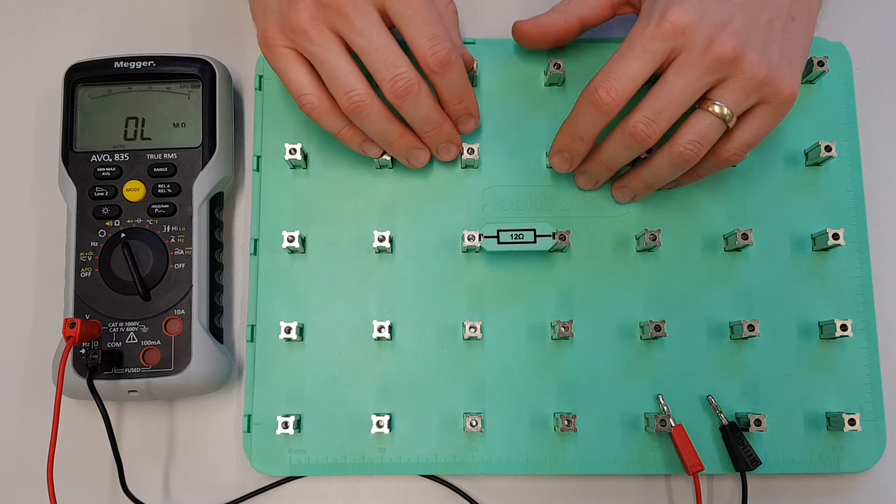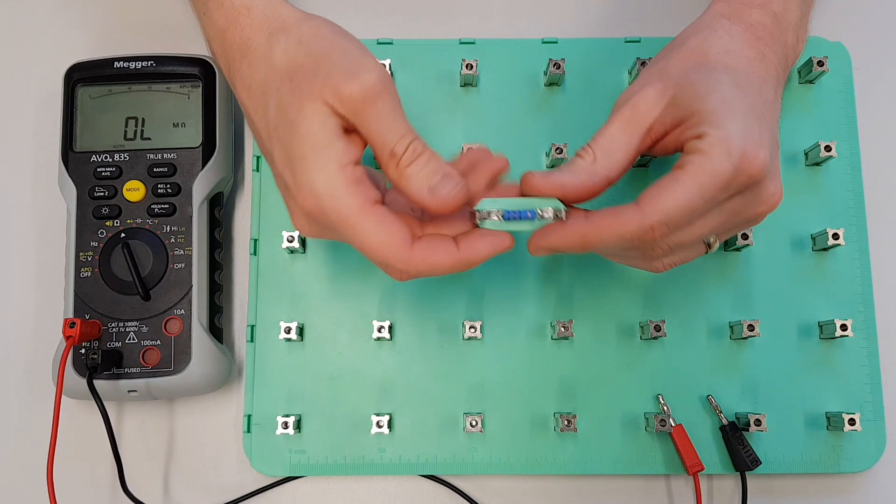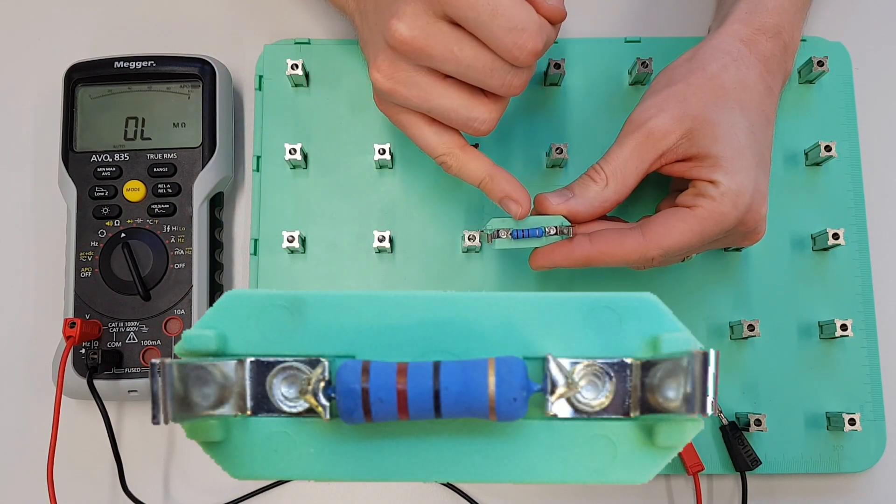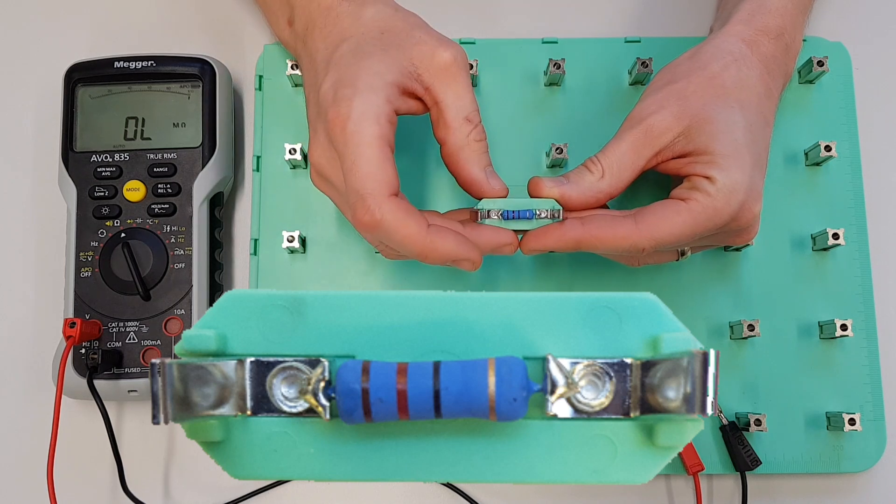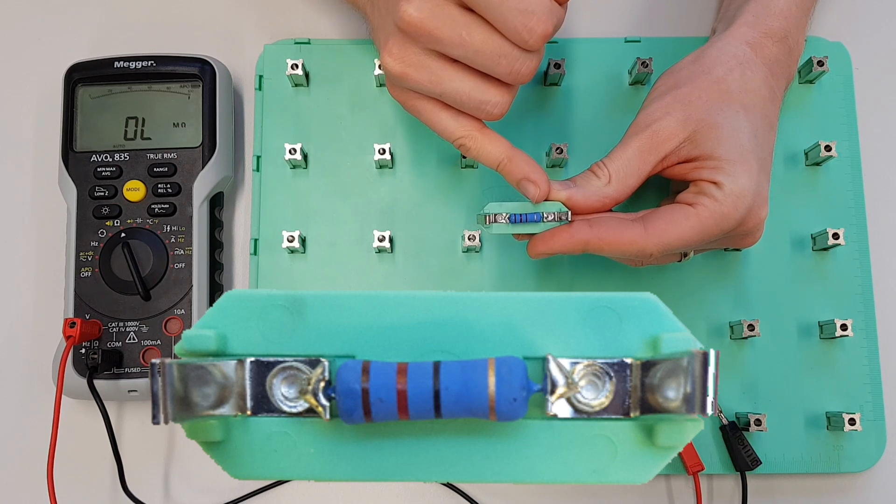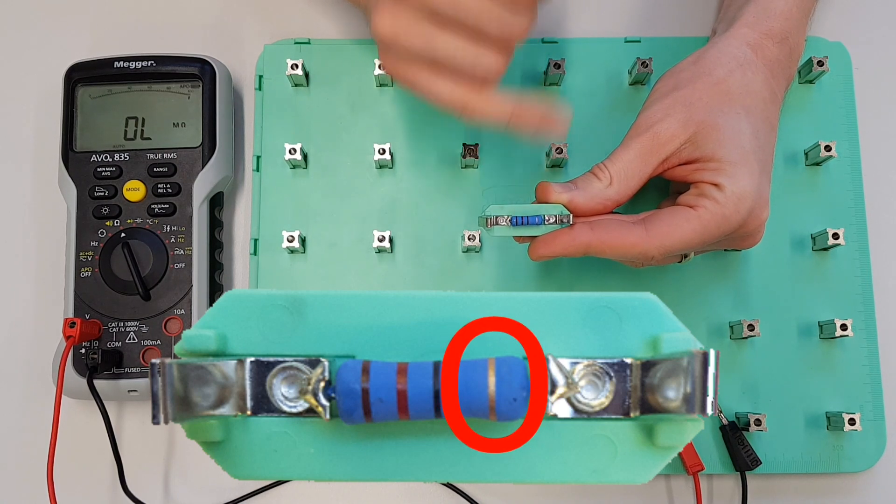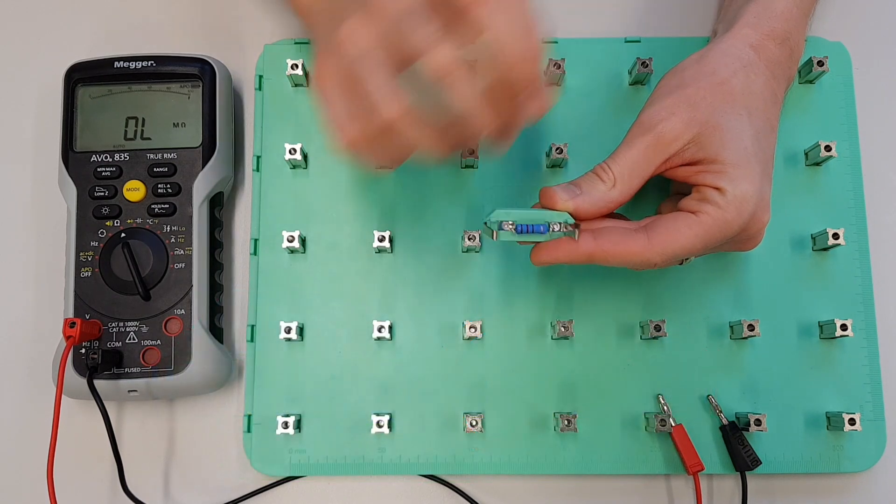We've got our Loctronix board ready to go. We've already plugged in a 12 ohm resistor. If we just have a quick look at the back of this resistor, you can see there it's got these colored bands on there. We're going to talk in another video about what those bands mean, but we're quite interested in just one of these. We're going to have a look in a moment at this final band here because that explains something quite interesting about what's going to be happening when we measure resistance.